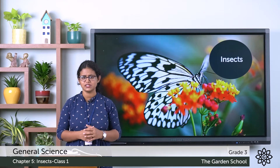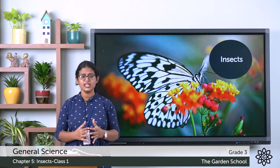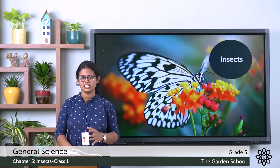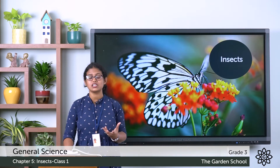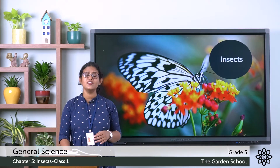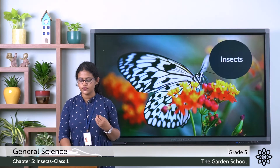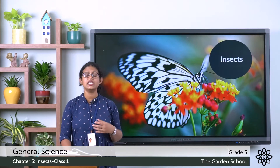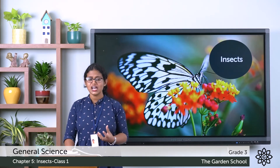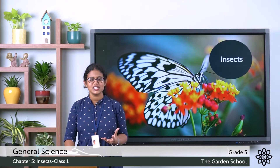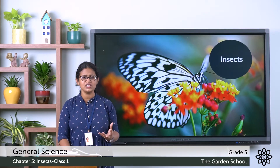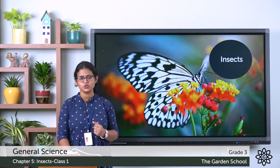Insects are small animals and we can say they form the largest group of animals. So where do these insects live? They live everywhere — they live in hot deserts, they live on plants, they live in water, and they even live in cold mountains. So insects are small animals which form the largest group of animals and you all have seen different insects around you.